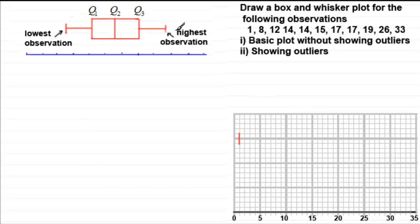We then look at our highest observation, which is 33, so we mark that at position 33 on the scale. Now we need to draw on our quartiles, starting with the median. I'm assuming you're familiar with working out quartiles for discrete data — if not, do check this out on my website, examsolutions.net.